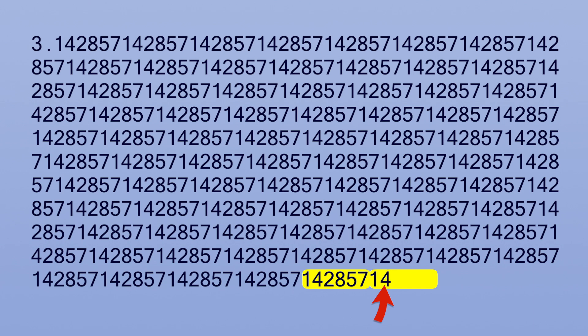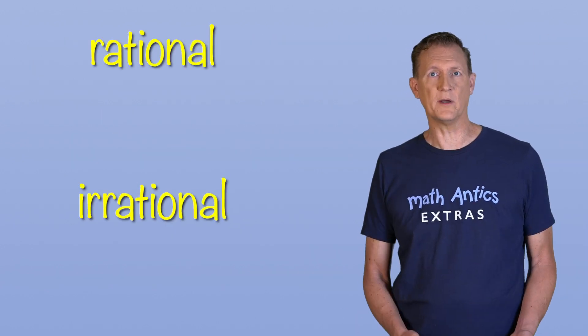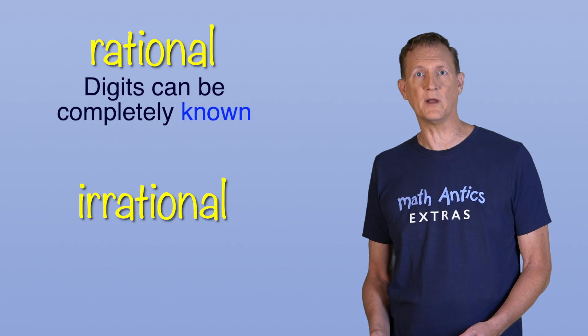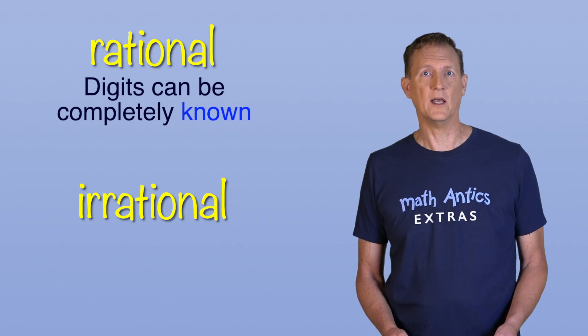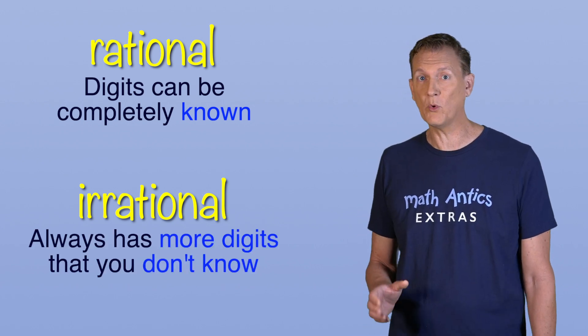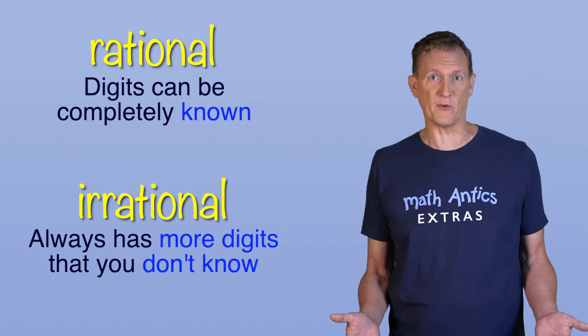But for pi, you don't know what the 501st digit is going to be until you calculate it. So, one way to understand the difference between rational and irrational numbers is that the digits of a rational number can be completely known. But an irrational number always has more digits that you don't know. They're kind of mysterious that way.